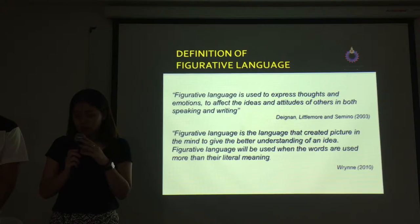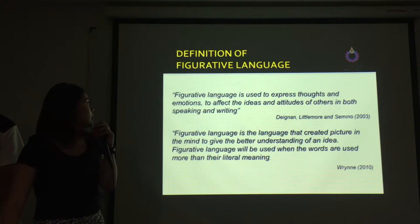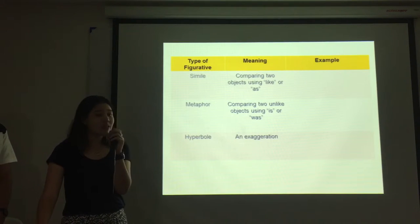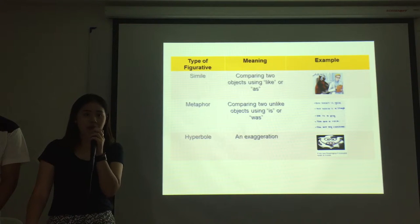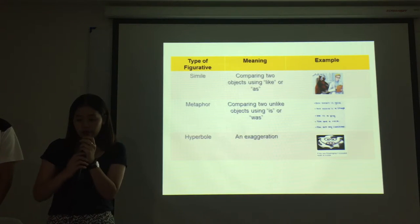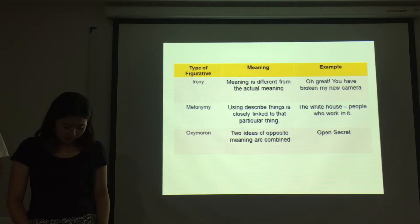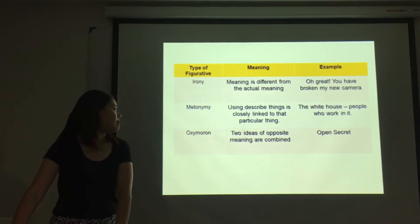Figurative language is used when words carry more than their literal meaning. The types of figurative language are: first, simile — comparing two objects using 'like' or 'as'; second, metaphor — comparing things using 'is' or 'was'; third, hyperbole — an exaggeration; fourth, irony — meaning different from the actual meaning; fifth, metonymy — using a closely linked word to describe something; and sixth, oxymoron — two ideas of opposite meaning combined.